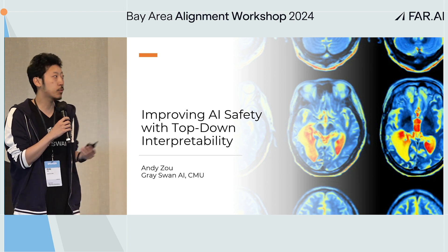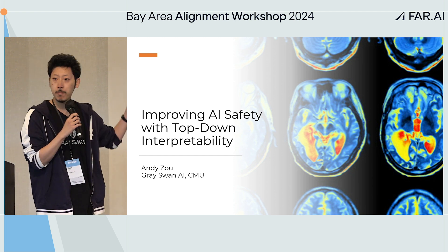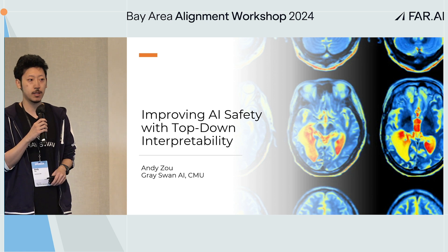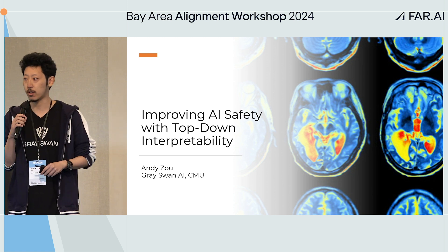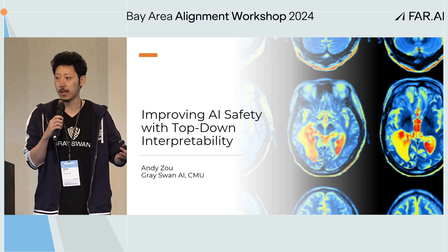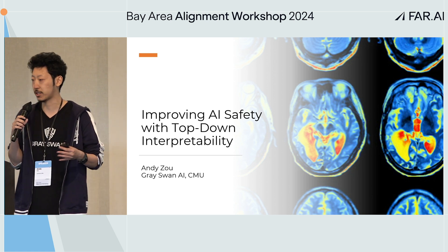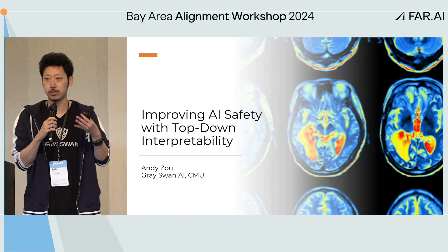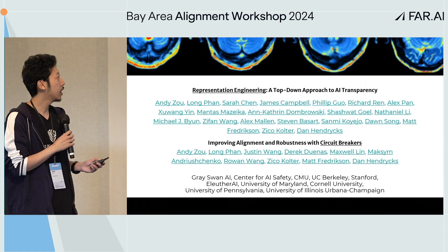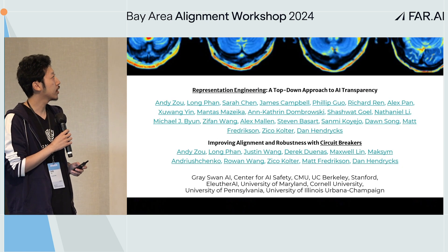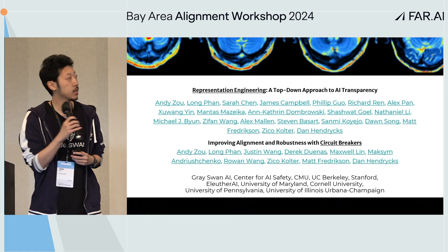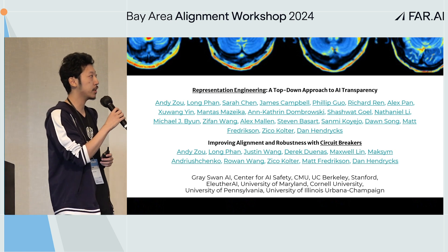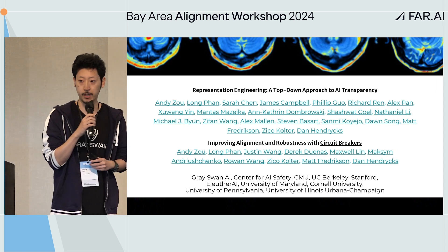We have great hope here with top-down interpretability, that we can achieve more impact by actually incorporating it into current systems. This talk is based on two papers: one is representation engineering, and the other is circuit breaking.